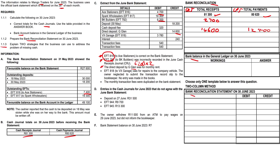EFT 818 to VX Garage was for repairs to a company vehicle - not personal use or drawings. The owner neglected to submit the transaction record slip to the bookkeeper and no entry was made in the books. That R3,780 is an outflow, so it's a payment.